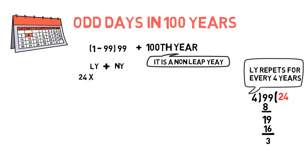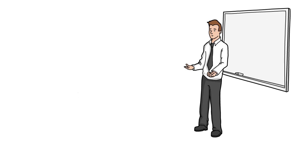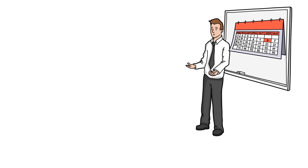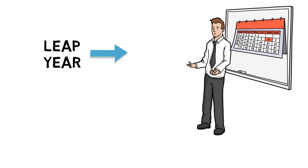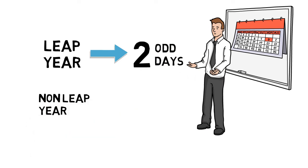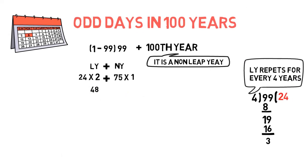We know that a leap year has 2 odd days. Non-leap years: 99 minus 24 gives us 75 non-leap years. A non-leap year has 1 odd day. So for the 24 leap years: 24 times 2 equals 48. For the 75 non-leap years: 75 times 1 equals 75.